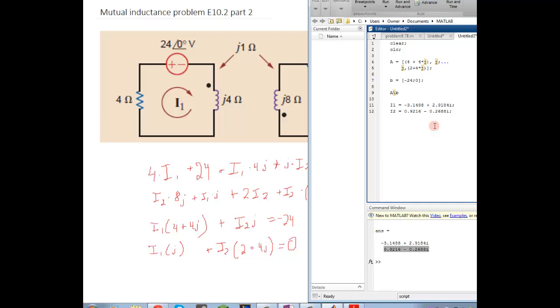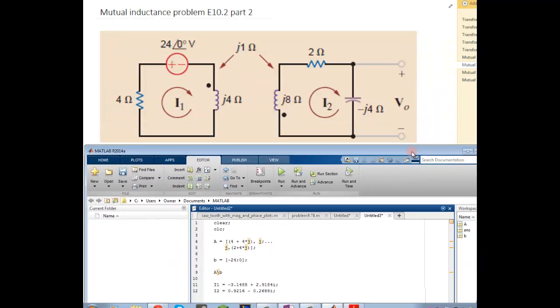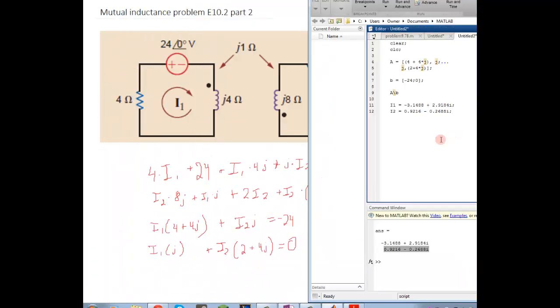So we'll do this because we still have to solve for V0. So V0 is I2 times negative 4J, which gives our answer for V0. So there's our 3 answers.